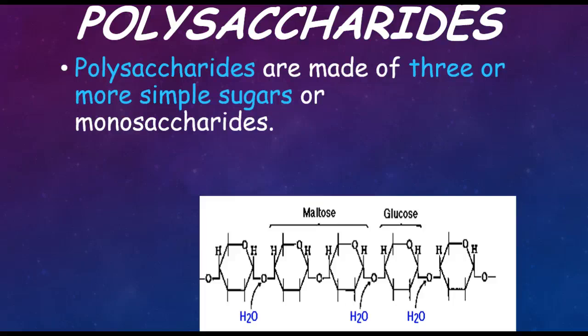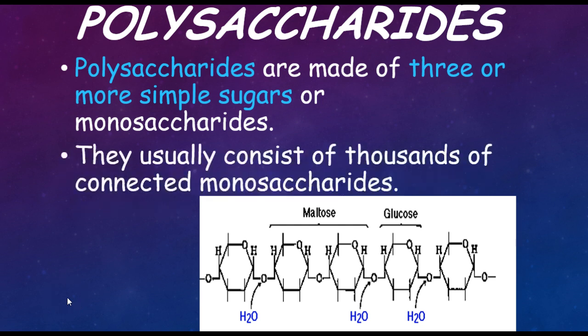Polysaccharides are made of three or more simple sugars, or monosaccharides. If you take a look at the picture, we have a maltose and a glucose that covalently bond to make a polysaccharide. Polysaccharides can usually consist of a thousand or more connected monosaccharides.